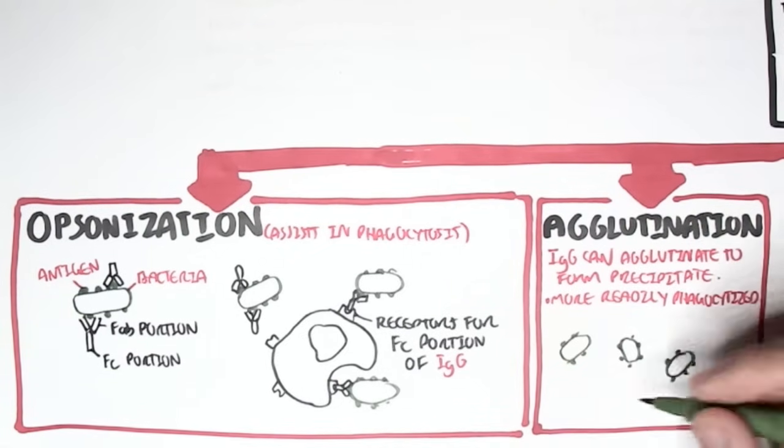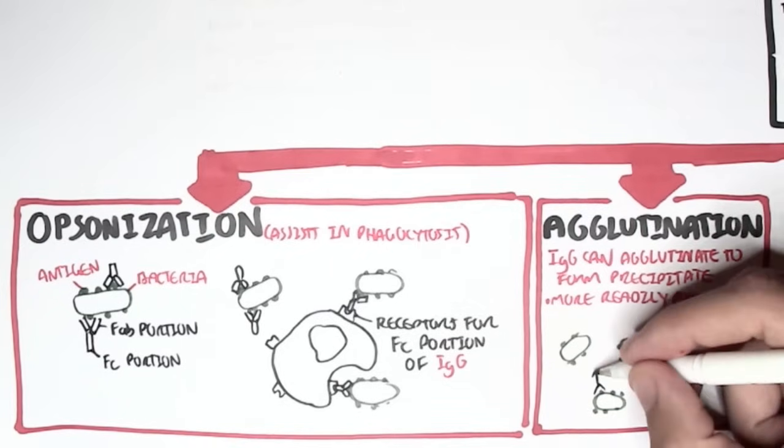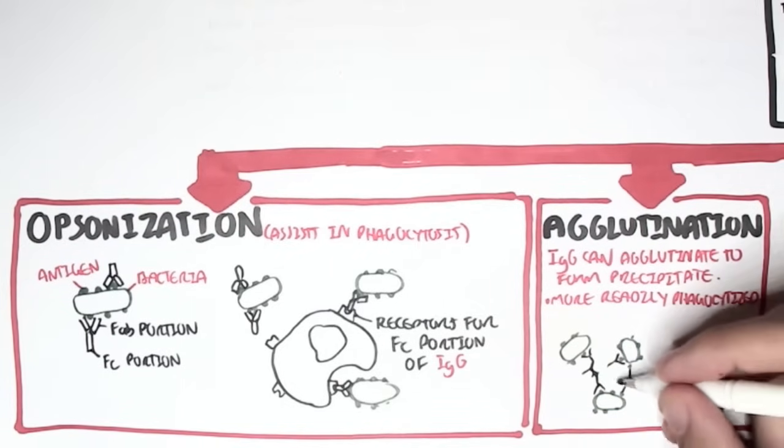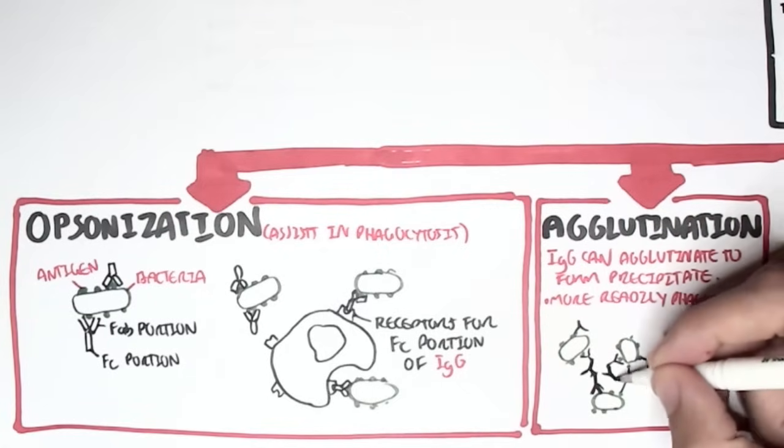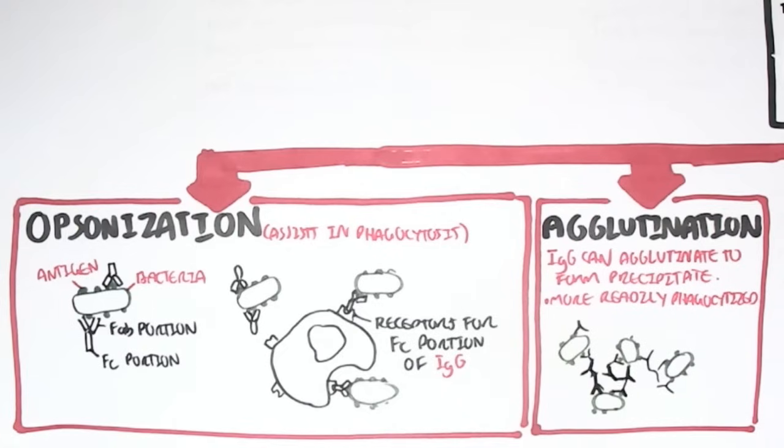So what I think this means is that when you have a lot of bacteria circulating around, for example, the IgG can basically bind onto these different bacteria and bind onto each other, forming sort of a club, a cluster. And so this allows the body to easily detect it and destroy all these bacteria at once.